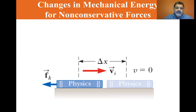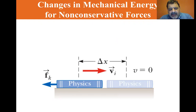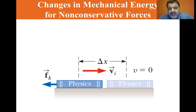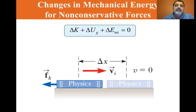Section 8.4: Changes in Mechanical Energy for Non-Conservative Forces. Before, we considered non-conservative forces that affected only kinetic energy of the system. Now, suppose the book on the surface is part of a system that also exhibits change in potential energy, like sliding down a ramp. In this case, f_k times d equals the change in internal energy due to decrease in mechanical energy from kinetic friction. So we have delta K plus delta U_gravitational plus delta E_internal all equal to zero.